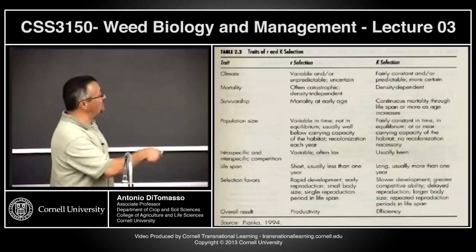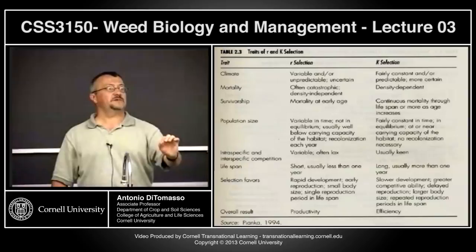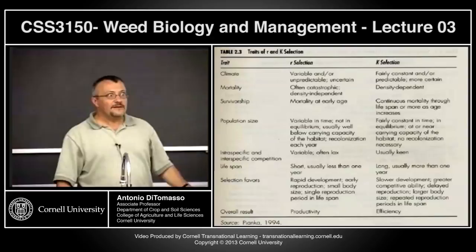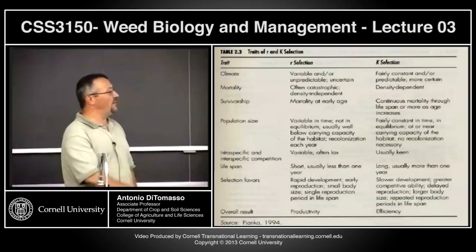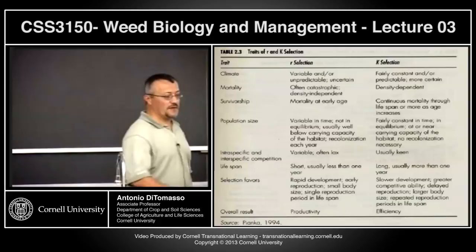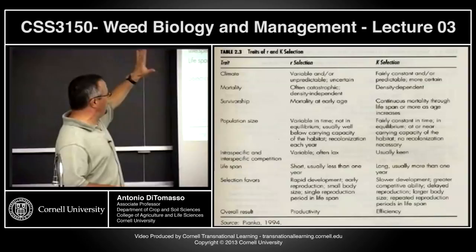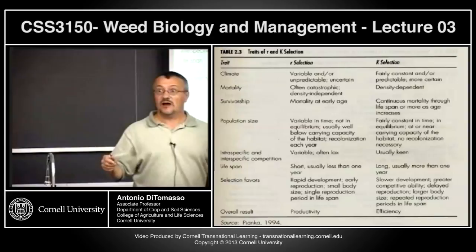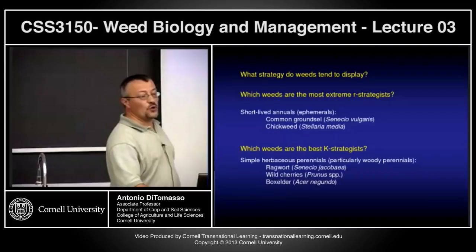Overall, R-selected species focus on productivity — getting a lot of seeds into the ground. K-selected species focus on efficiency. Think of it like the 100-meter dash versus a marathon — a marathon runner paces themselves for the long term. Just be familiar with some of these traits. Remember, R and K selection is not limited to plants or weeds; if you're taking an animal ecology course, you'll cover this as well.